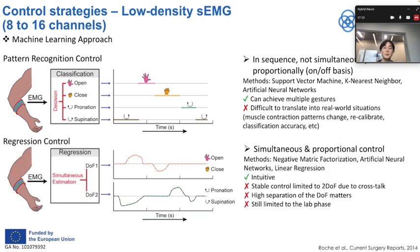The more intuitive method is called proportional control, where a linear mapping to the kinematics of the hand joints is performed. In this way, the corresponding joints are simultaneously and proportionally controlled, and the user feels more intuitive than with any other method. However, due to the crosstalk effect, the number of degrees of freedom that can be separated is limited to two DOF, and it is still limited to the lab environment.